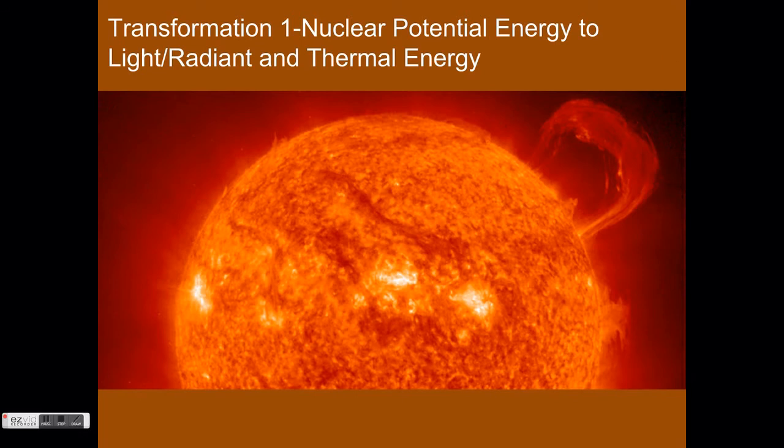As per usual, energy begins its journey in the core of the sun in the form of nuclear potential energy. In the first transformation, energy has changed from nuclear potential to radiant and thermal energy. For more information on this process, watch the riding a bike energy transfer video on this playlist. So in our first transformation, energy begins its start in the sun.